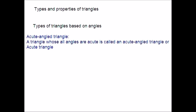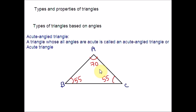Acute angle triangle — a triangle whose all angles are acute is called an acute angle triangle or acute triangle. Acute means the angle is lesser than 90 degrees. For example, angle A is 70°, angle B is 55°, and angle C is 55° — all three angles are lesser than 90. So this will be considered an acute angle triangle.